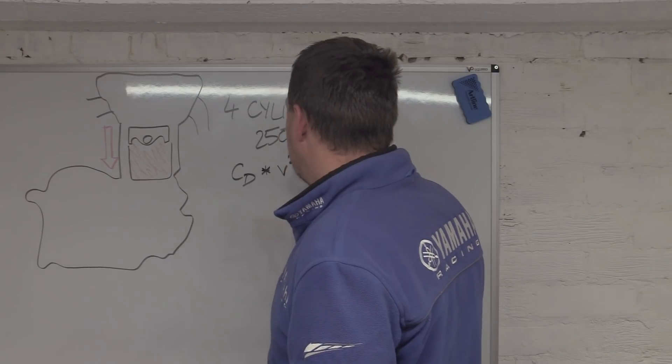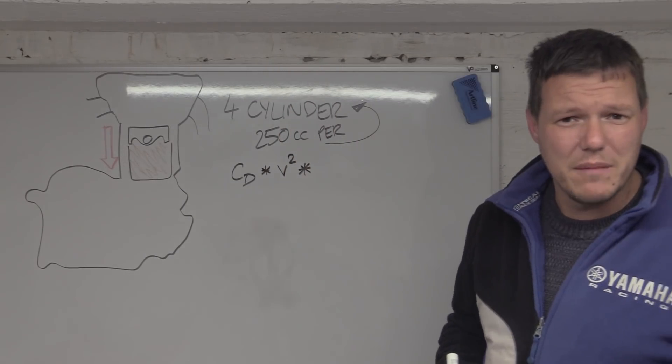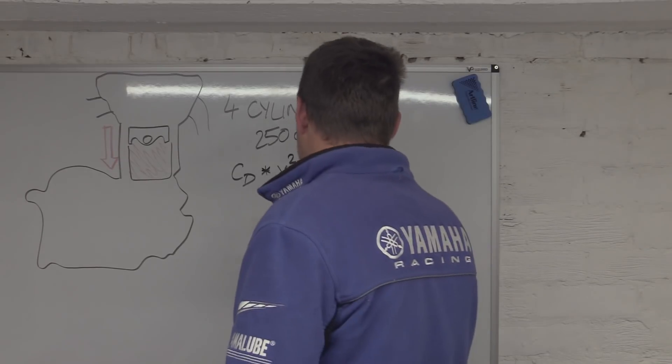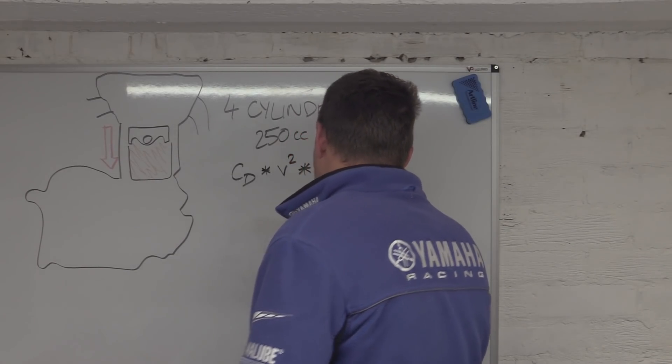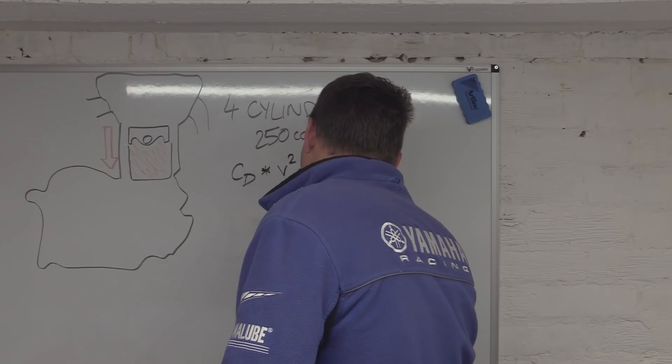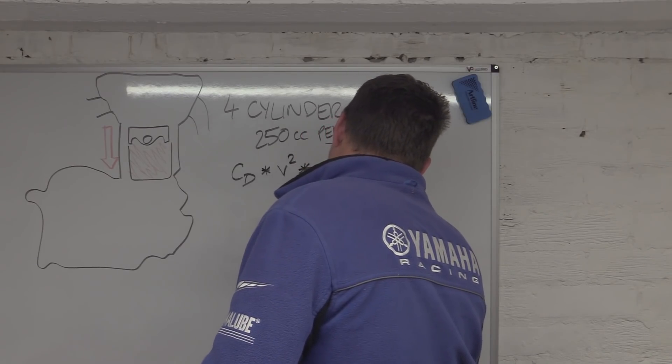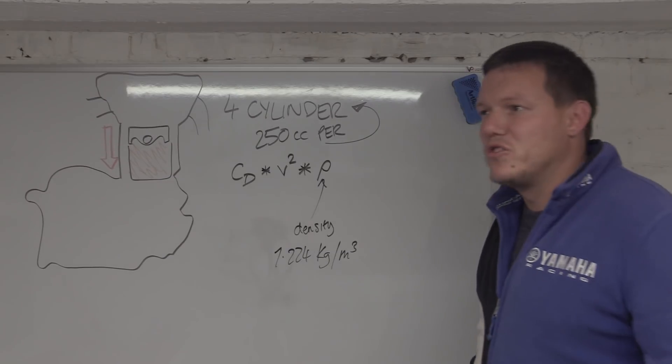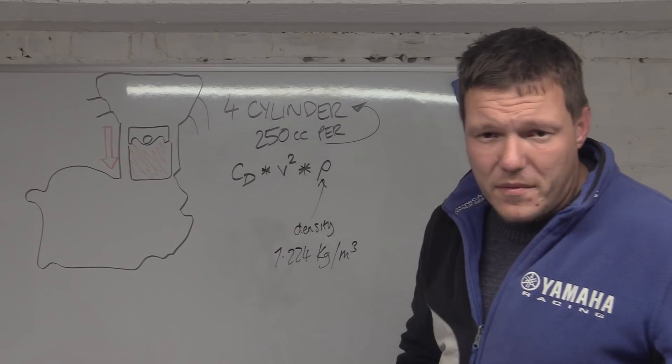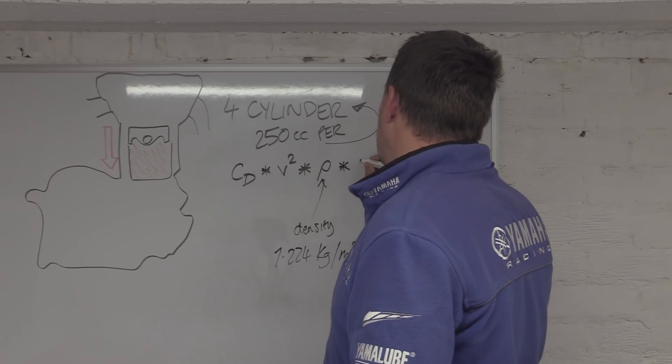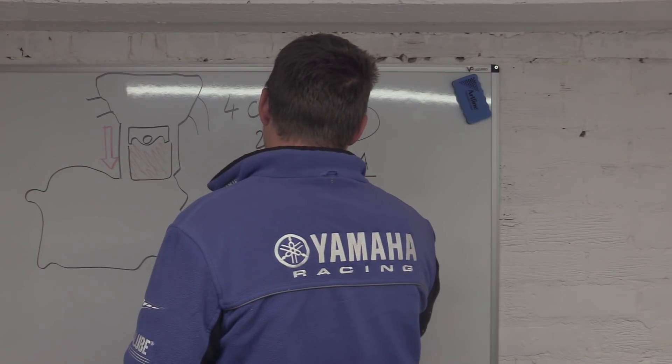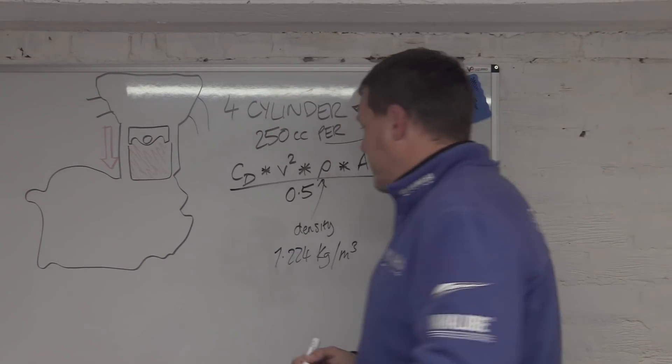It's CD, and then you multiply this by your velocity squared, and then you times this by rho, which is like a weird P, this is basically just density. For air at 20 degrees, depending on your conditions, it's around about 1.224 kilograms per cubic meter for dry normal everyday air.